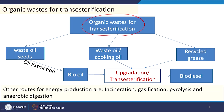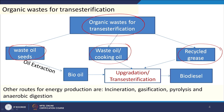Now, what types of feedstocks are more suitable for this transesterification process? We have organic waste including waste oil seeds, waste or cooking oil, and recycled grease. These three major categories can be processed through this route. If it is a waste oil seed, we must extract the oil first — bio oil extraction — and then that bio oil, along with waste cooking oil and recycled grease, is converted to biodiesel through transesterification. This process is called upgradation of the oil.